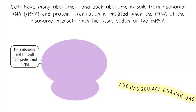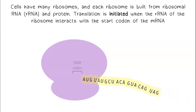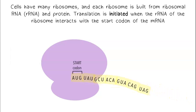Cells have many ribosomes, and each ribosome is built from ribosomal RNA and protein. Translation is initiated when the rRNA of the ribosome interacts with the start codon of the mRNA.